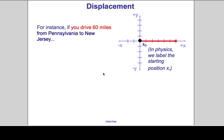In this example, we're going to look at a trip with multiple legs. If you drive 60 miles from Pennsylvania to New Jersey, looking at a map, you'd be driving toward the east. You would start at your starting location — the origin — and move to the east, which in this case is the positive X axis. After driving 60 miles, you'd be at that location.